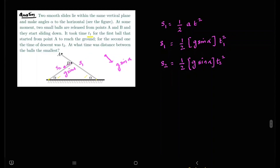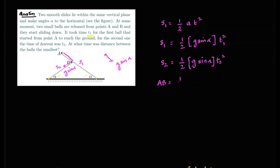Now I can calculate the length AB. Because of the construction it's an isosceles triangle, so the two equal sides have length s1 and s2. Therefore AB = s1 - s2 = ½·g·sin(alpha)·(t1² - t2²), where t1 is the greater time. So we've found AB. Now let's think about how to approach this problem using the frame of reference of A.